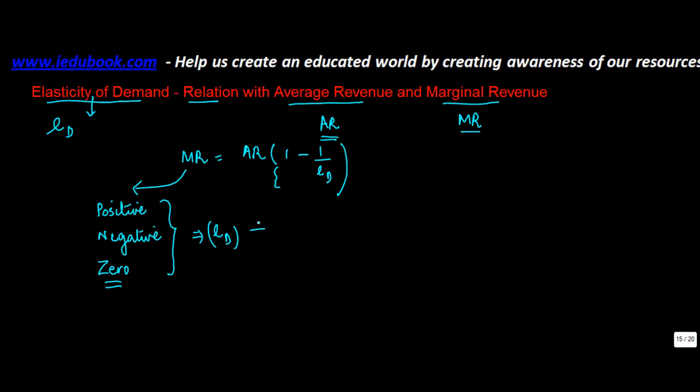Now how is this possible? So let's say we take certain values of ED. Let's say elasticity of demand is equal to 1. In that case, marginal revenue will be equal to average revenue into 1 minus 1 upon 1, or average revenue into 1 minus 1, or average revenue into 0, which is 0. So when ED is equal to 1, marginal revenue is equal to 0.